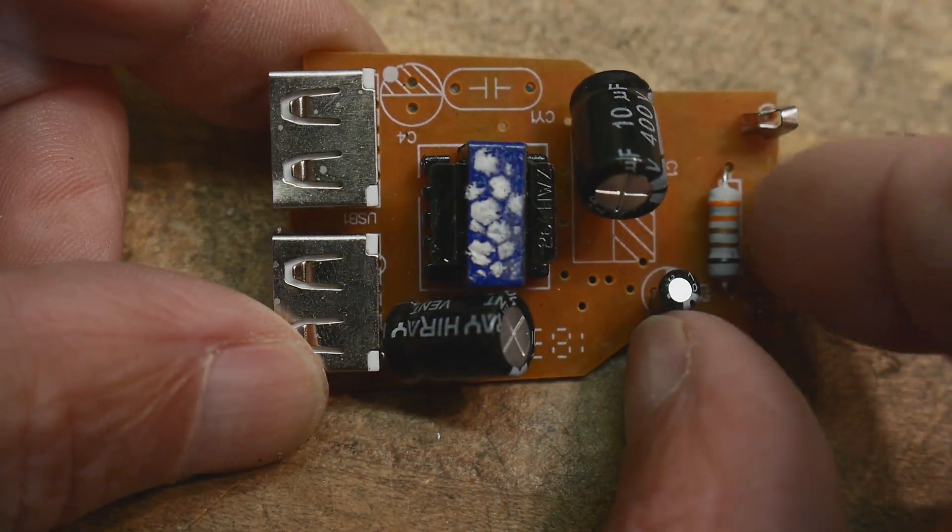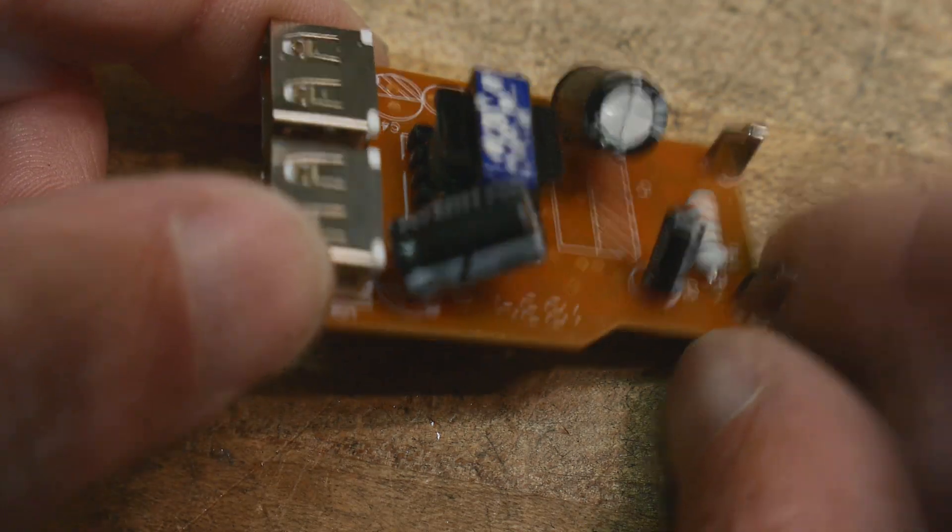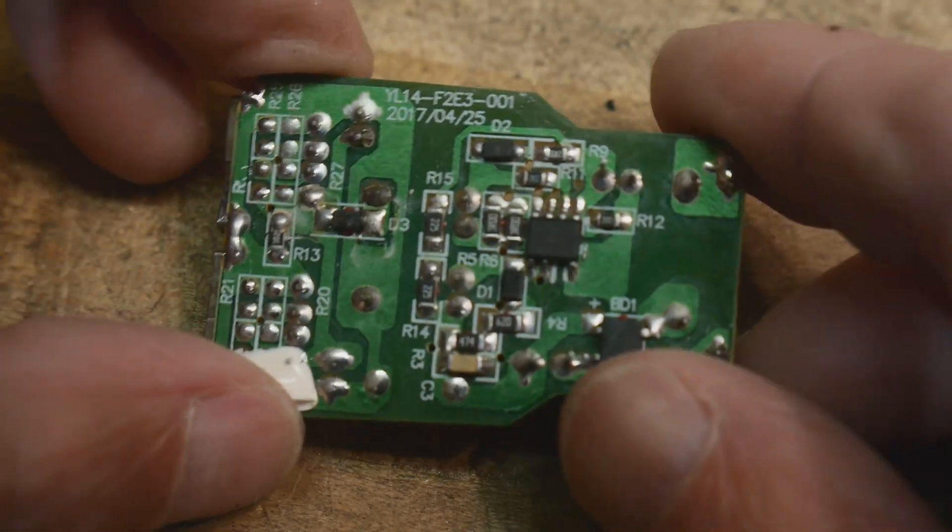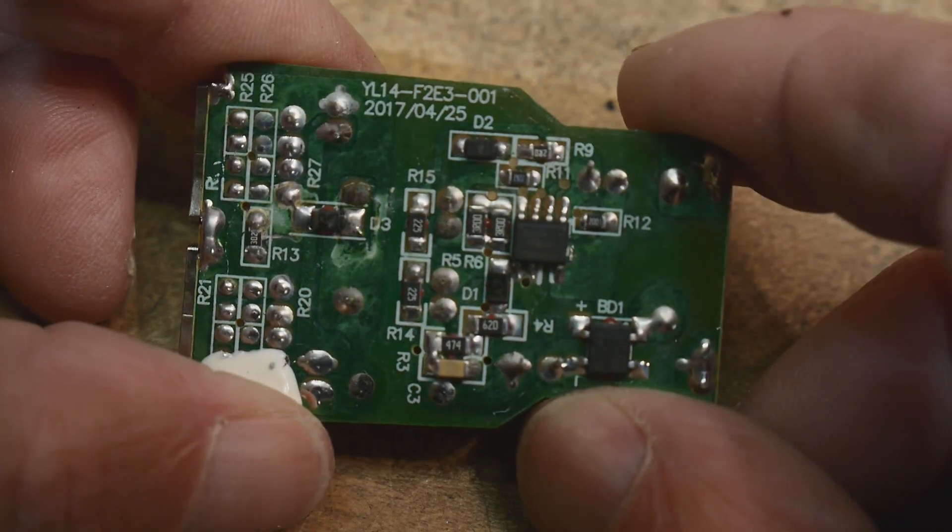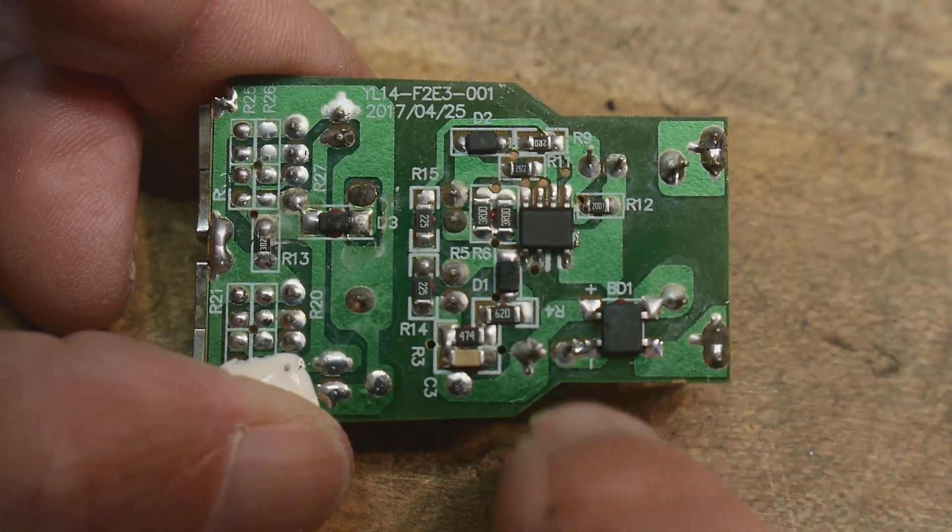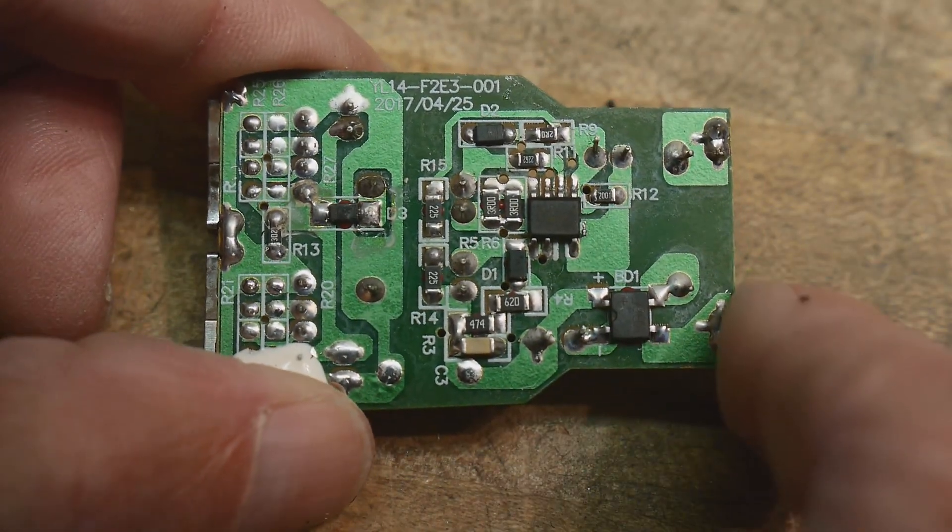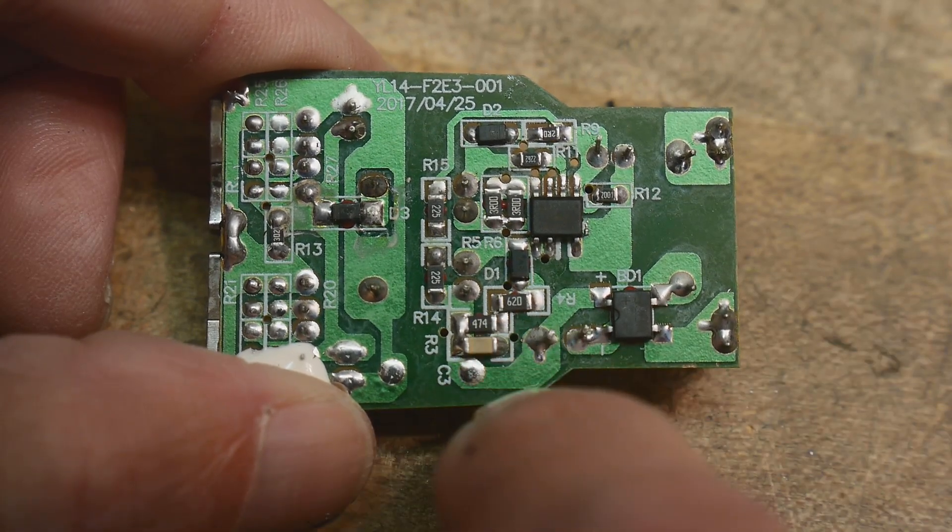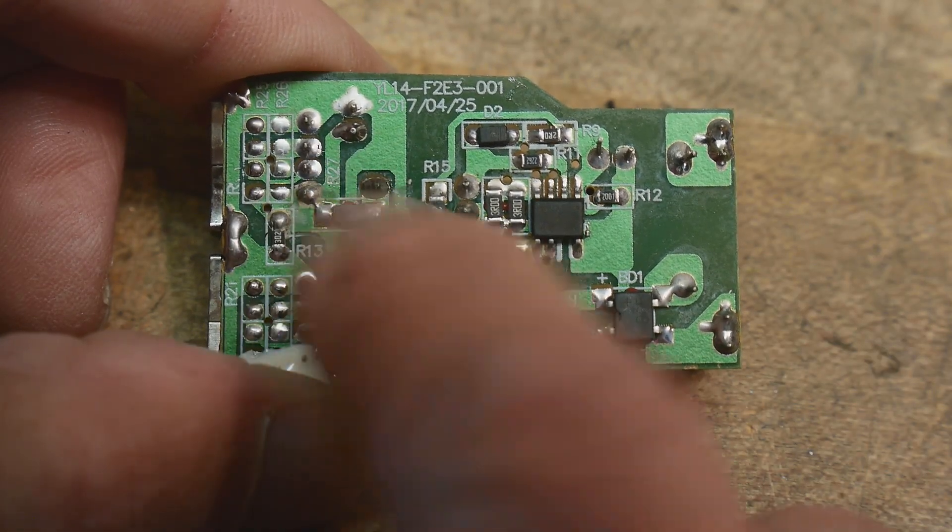Some extra ones over here that they didn't load. On the bottom side we've got a control chip. Here's a bridge rectifier, and that's it.